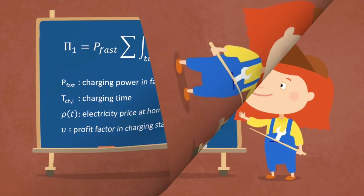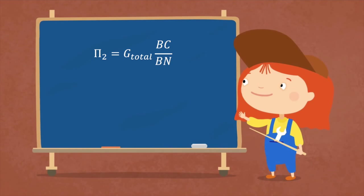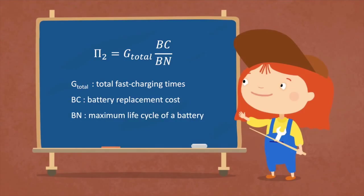The second part, Pi-2, is the cost of battery loss of life. G-total is the total fast charging times, Bc is the battery replacement cost, and Bn is the maximum life cycle of a battery.